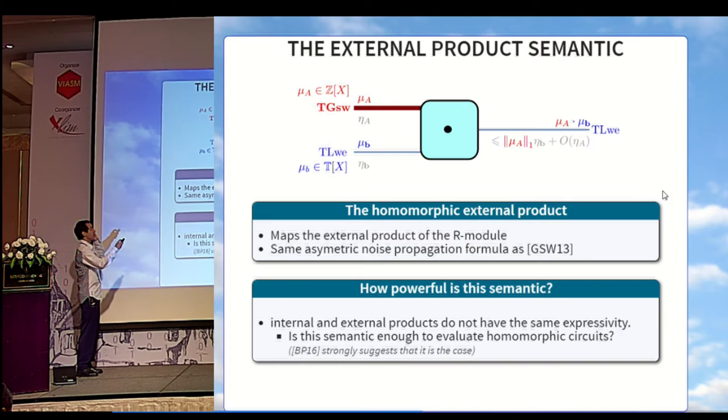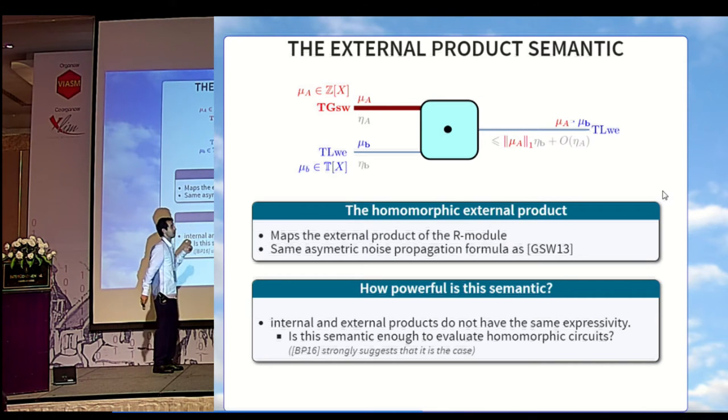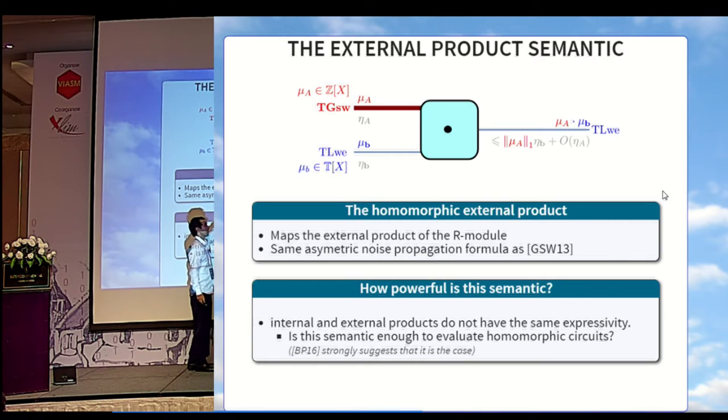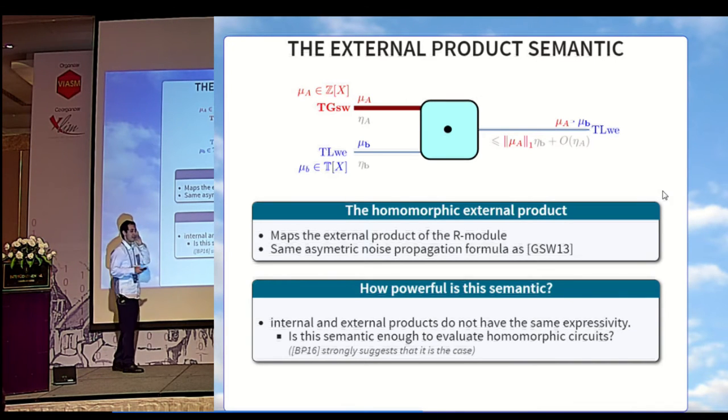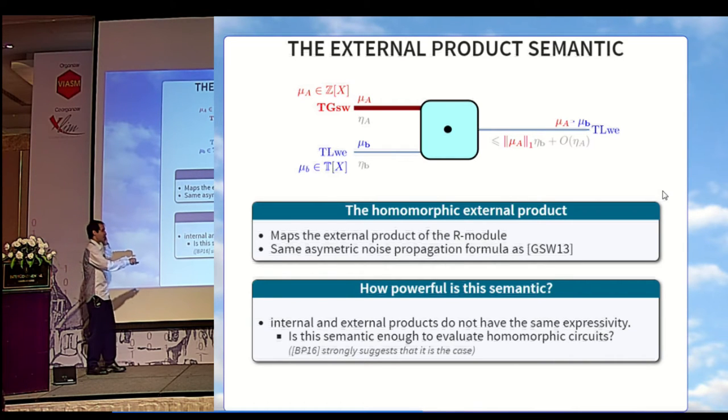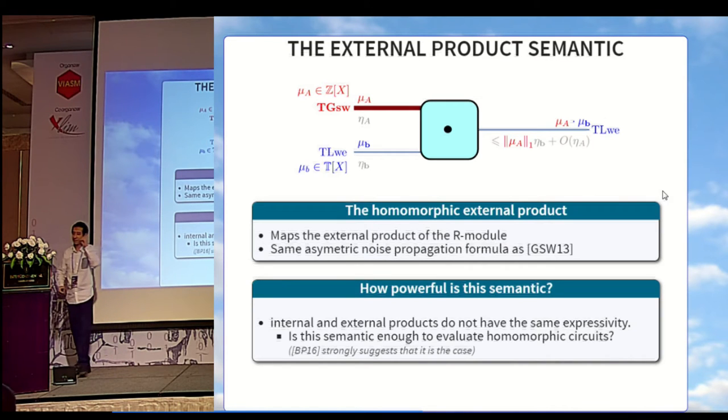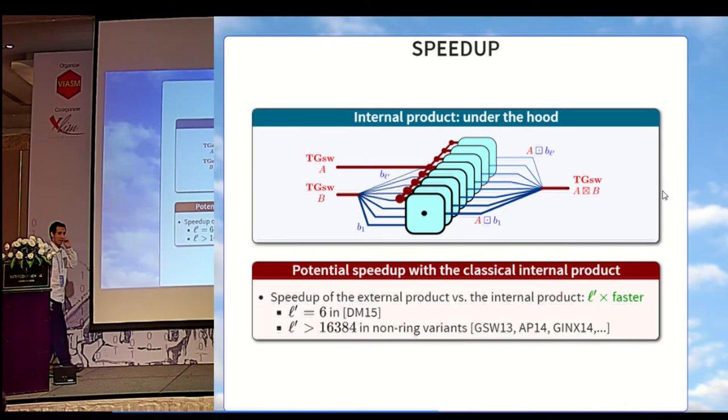In fact, we can write an external product between a GSW ciphertext and a LWE ciphertext. One on the integer message base and the other one on the continuous torus, which also maps the product of the two, but this time it's the external product of the module. For the noise formula, we have exactly the same as the original GSW. Question: How powerful is this semantic? We know that internal and external products don't have the same expressivity, especially concerning composition. Is it enough to evaluate most of the homomorphic circuits? Once again, the results in Brackersky and Perlman strongly suggest that it is the case.